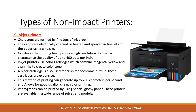Inkjet printers use color cartridges which combine magenta, yellow, and cyan inks to create color tones. A black cartridge is also used for crisp monochrome output. These cartridges are very expensive. This method of printing can generate up to 200 characters per second and allows for good quality, cheap color printing. Photographs can be printed using special glossy paper. These printers are available in a wide range of prices and models.